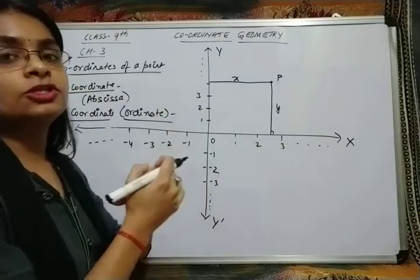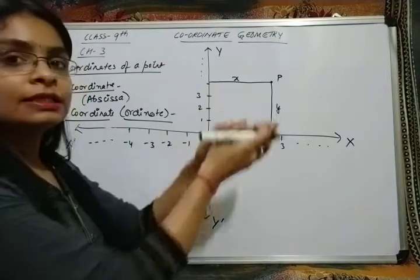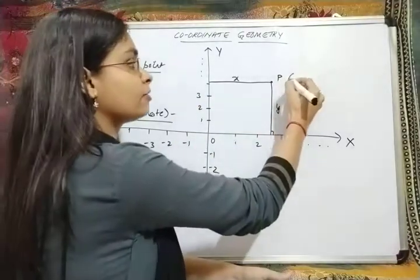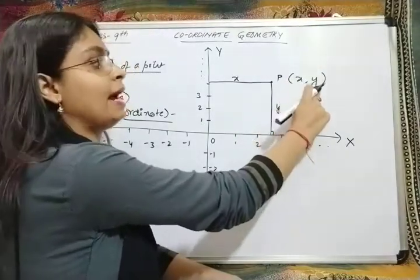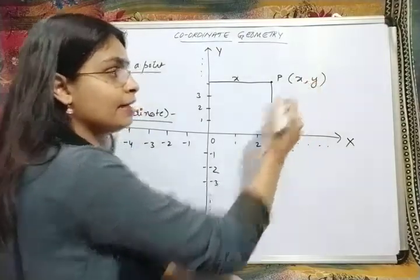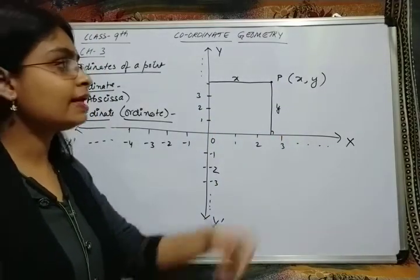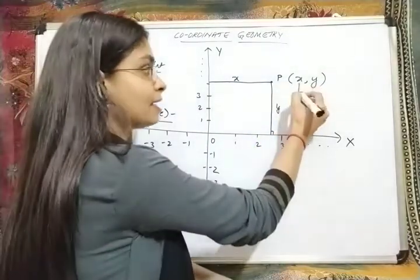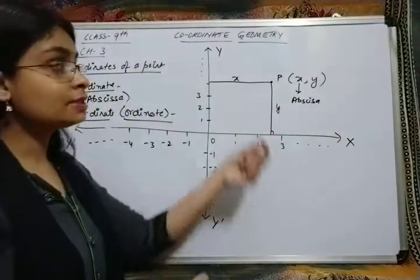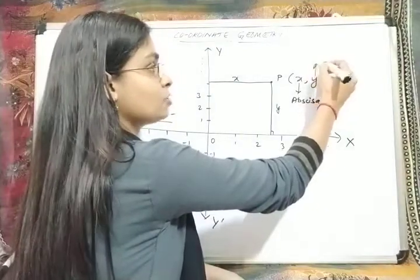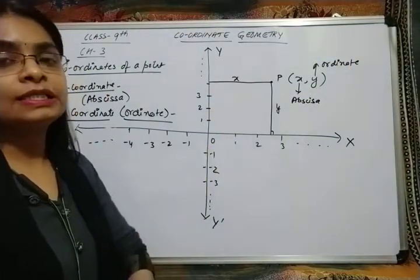The collection of the x-coordinate and y-coordinate together is known as the coordinates of a point. We represent it as an ordered pair (x, y) — first the x-coordinate, then the y-coordinate in brackets with a comma. So x is the abscissa of point P, and y is the ordinate of point P. Together they form the coordinates of the point.